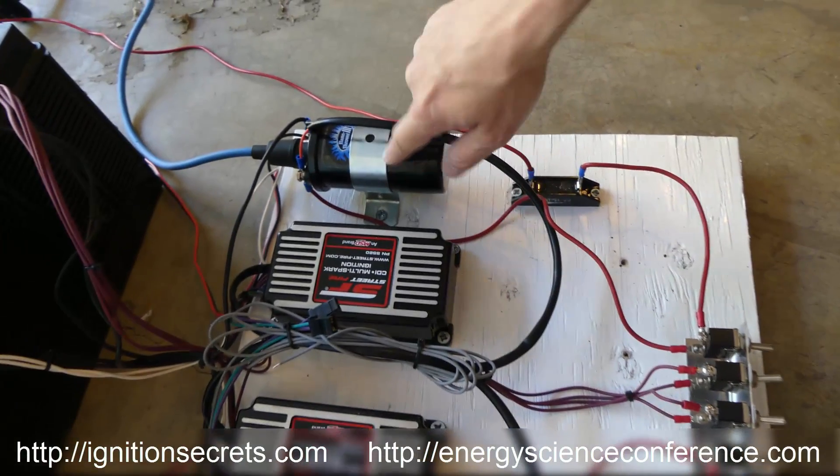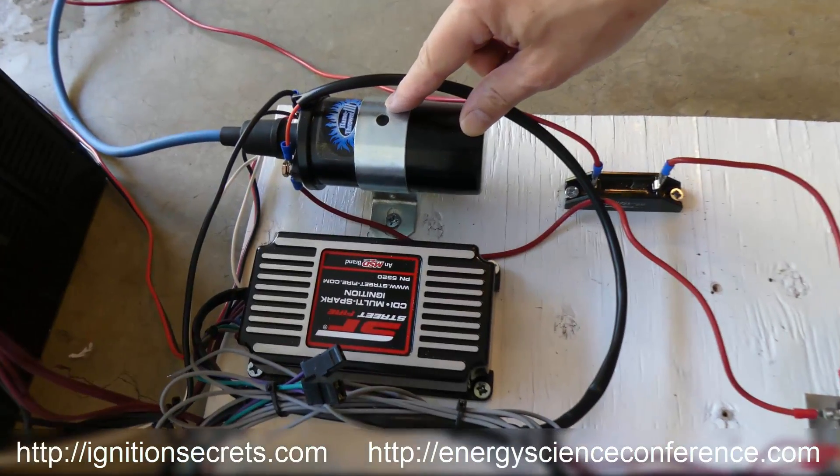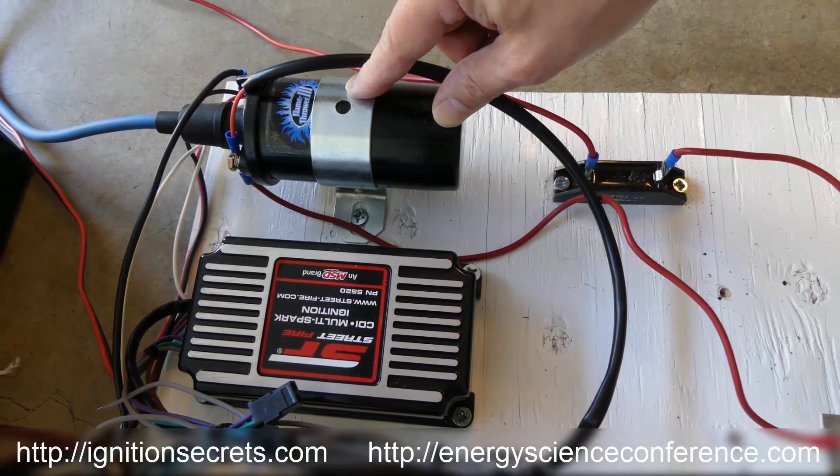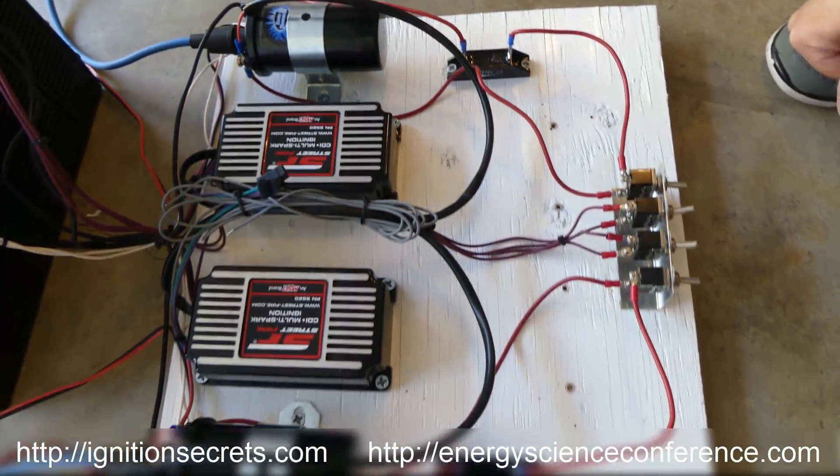And again, the coils you want. These are some of the best ones I've used, Flamethrower 3 by Petronix. These are 0.32 ohms or so on the primary, one-third of an ohm, that's very low.